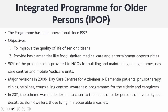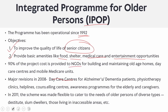The second important aspect is the Integrated Program for Older Persons (IPOP), operational since 1992. Its key objectives are to improve the quality of life of senior citizens and to provide basic amenities like food, shelter, medical care, and entertainment opportunities. IPOP is more specific than NPOP with respect to these aspects. Under IPOP, 90% of the project cost is provided to NGOs for building and maintaining old age homes, daycare centers, and mobile Medicare units.